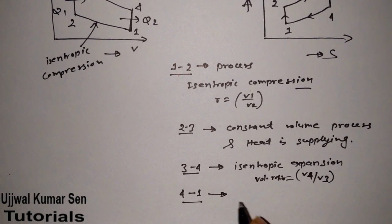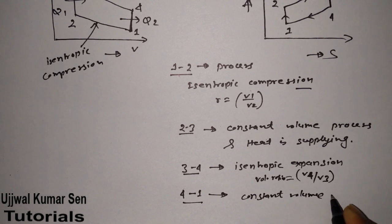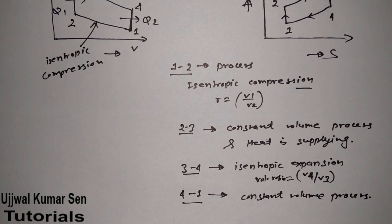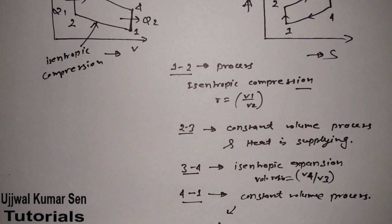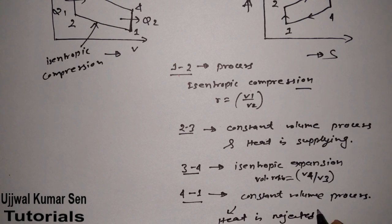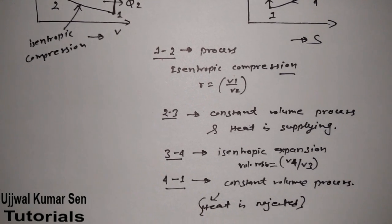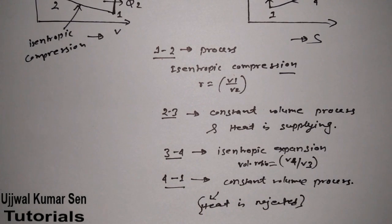For the 4 to 1 process, it is again a constant volume process. In this process, heat is being rejected.